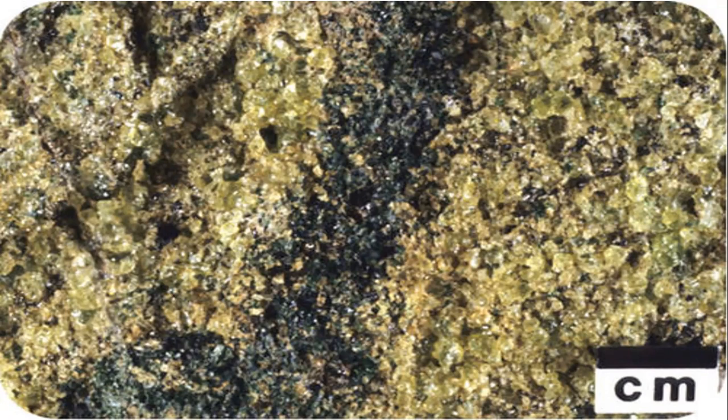Peridotite is rare on Earth's surface. The rock of the mantle is mostly peridotite. Peridotite is formed of crystals of olivine, which is green, and pyroxene, which is black.